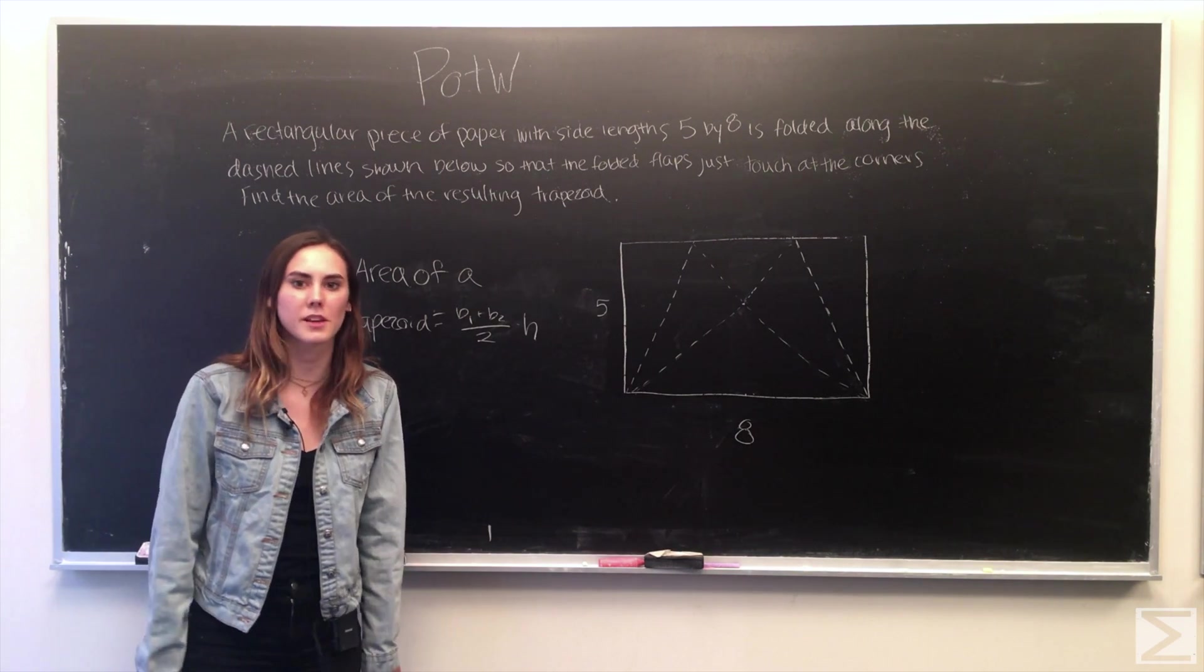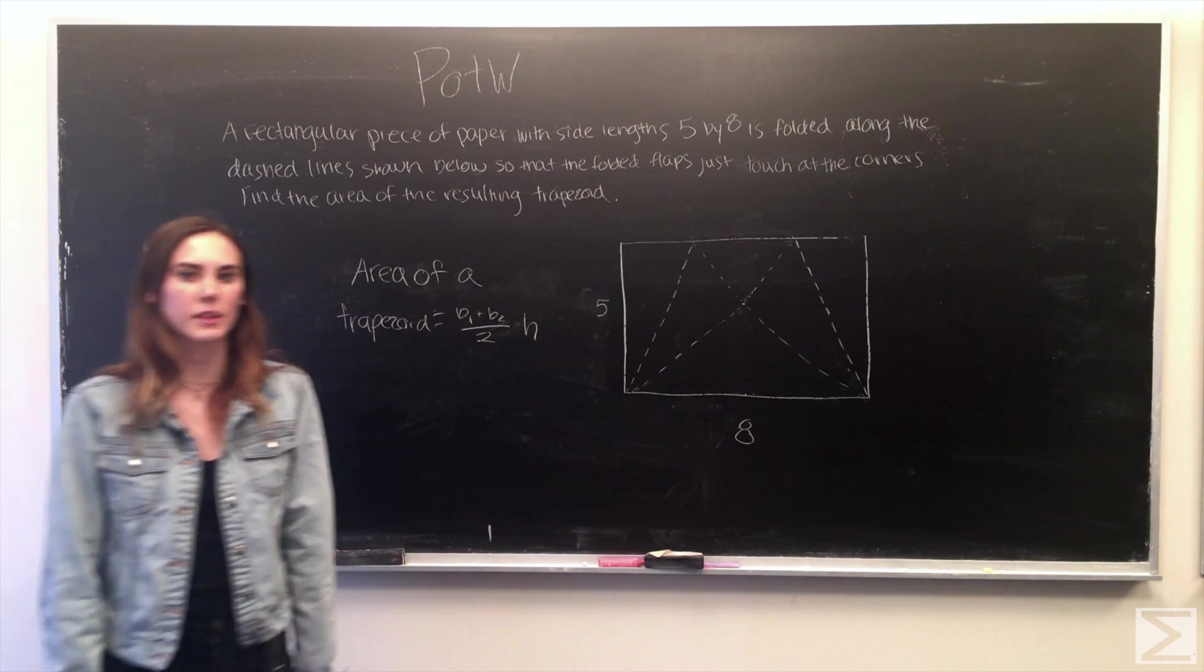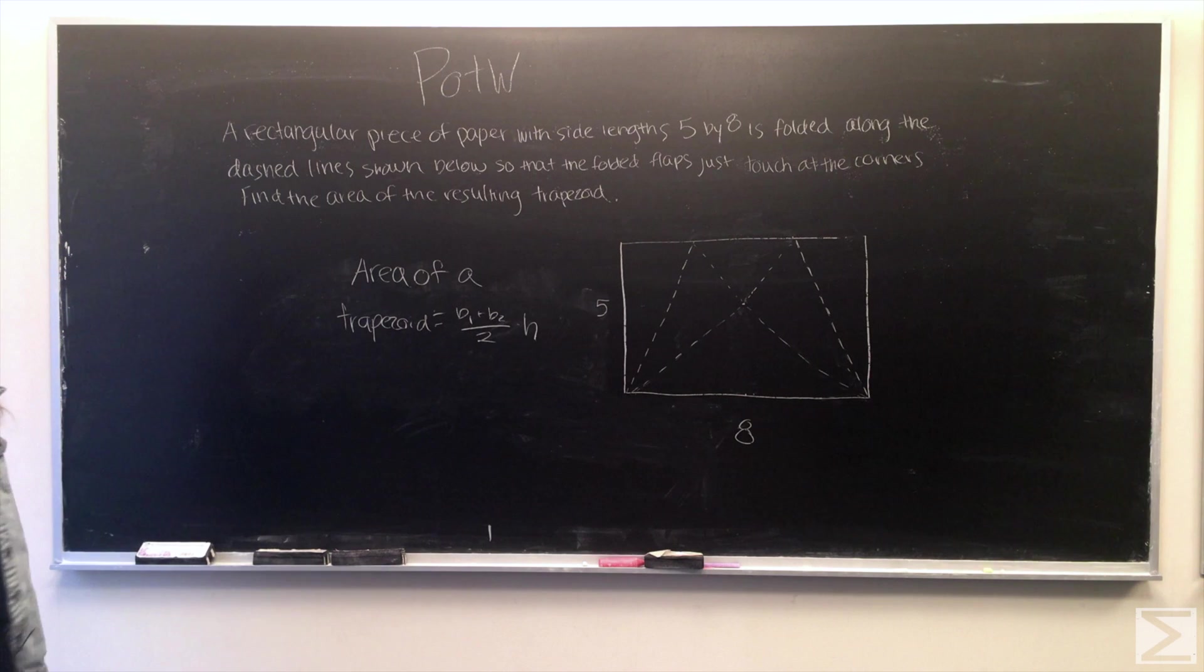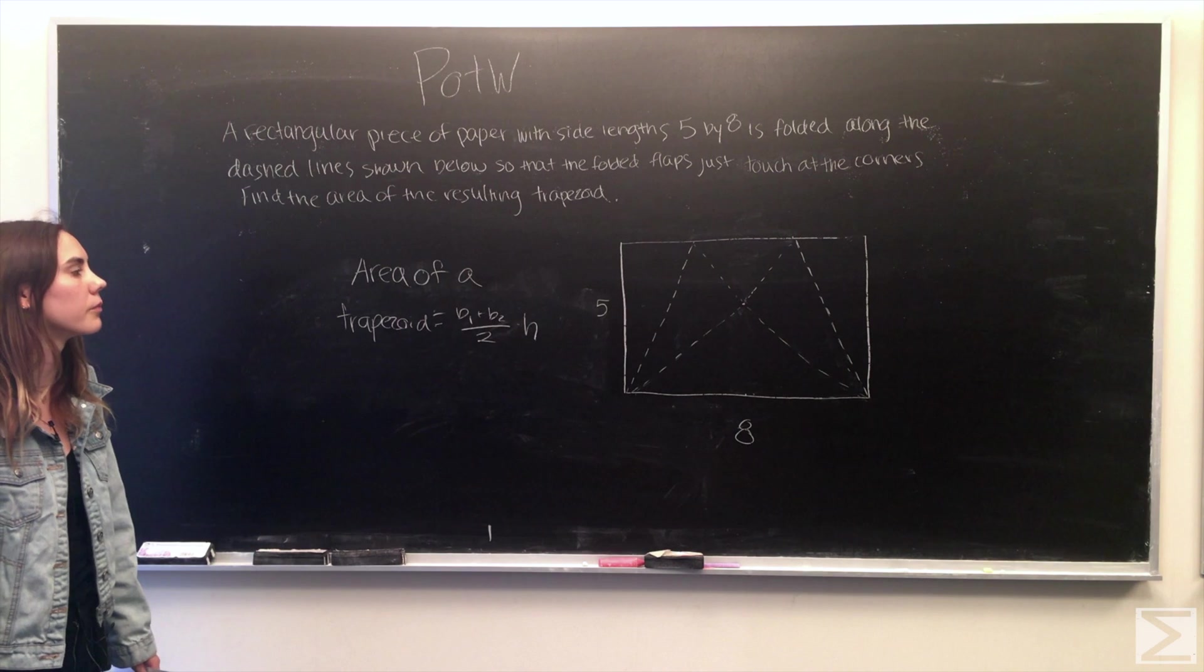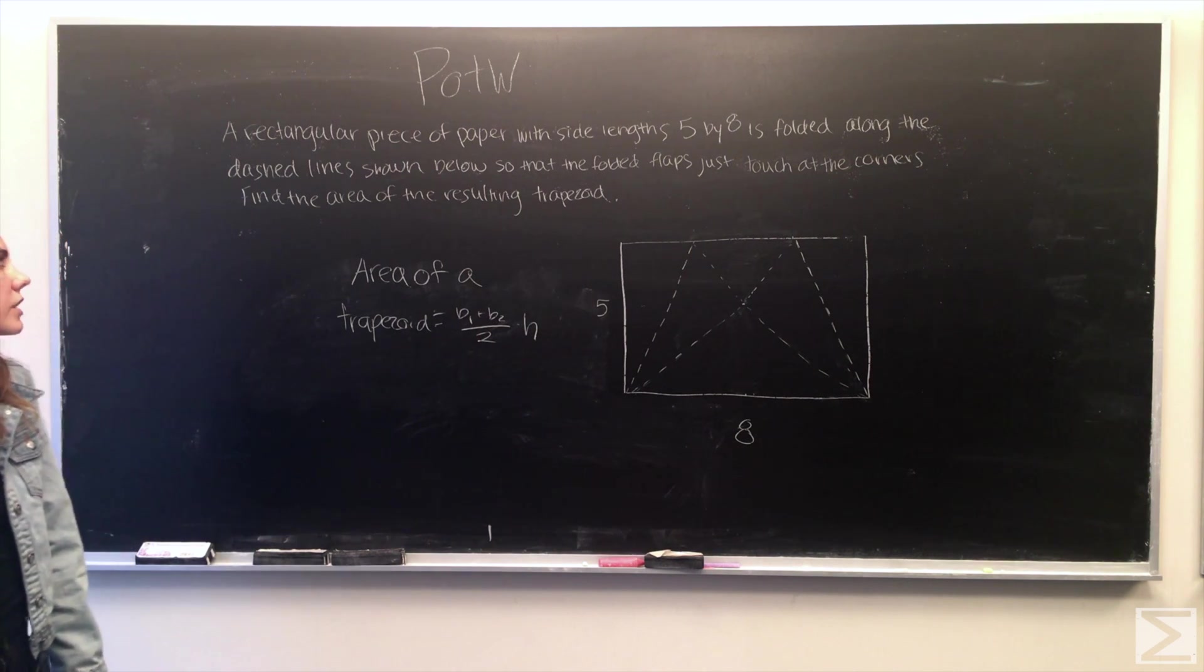Hello and welcome to the Worldwide Center of Maths problem of the week. This week the problem is a rectangular piece of paper with side length 5 and 8 is folded along the dashed line shown below so that the folded flaps just touch at the corners. Find the area of the resulting trapezoid.